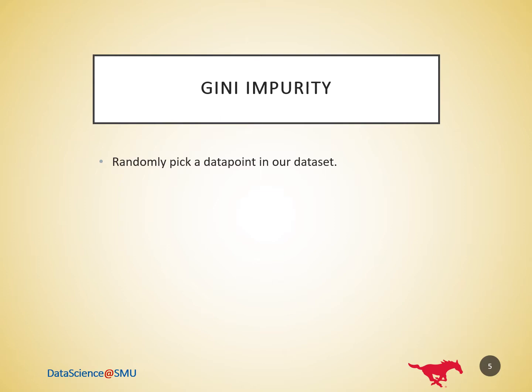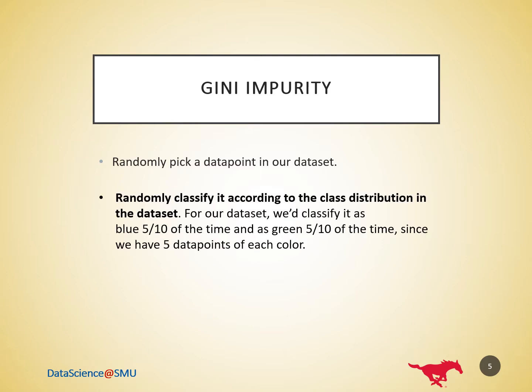This is where the Gini impurity metric comes in. Suppose we randomly pick a data point in our dataset, then randomly classify it according to the class distribution in the dataset. For our dataset, we would classify it as blue 5 tenths of the time and as green 5 tenths of the time, since we have five data points of each color. So, what's the probability we classify the data point incorrectly? The answer to that question is the Gini impurity.